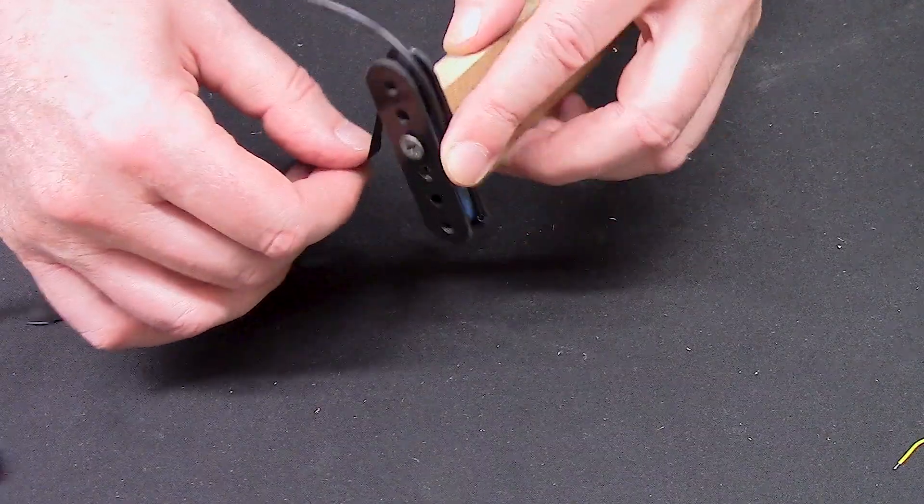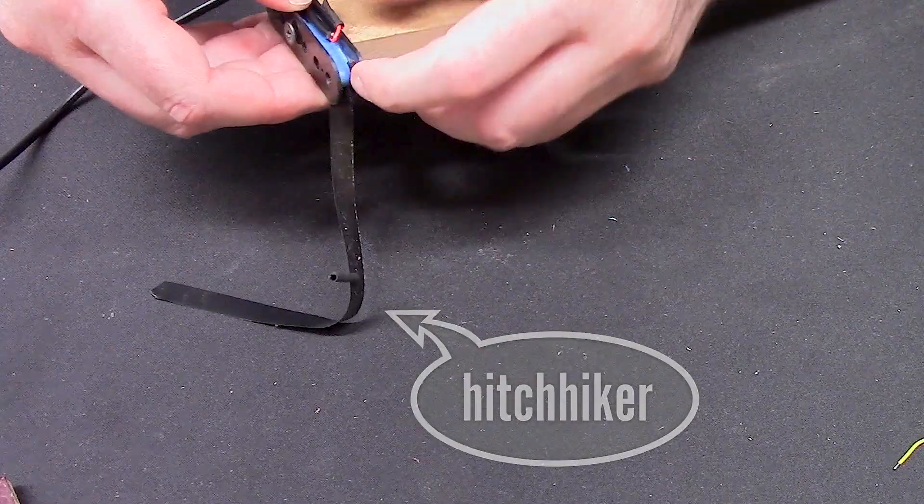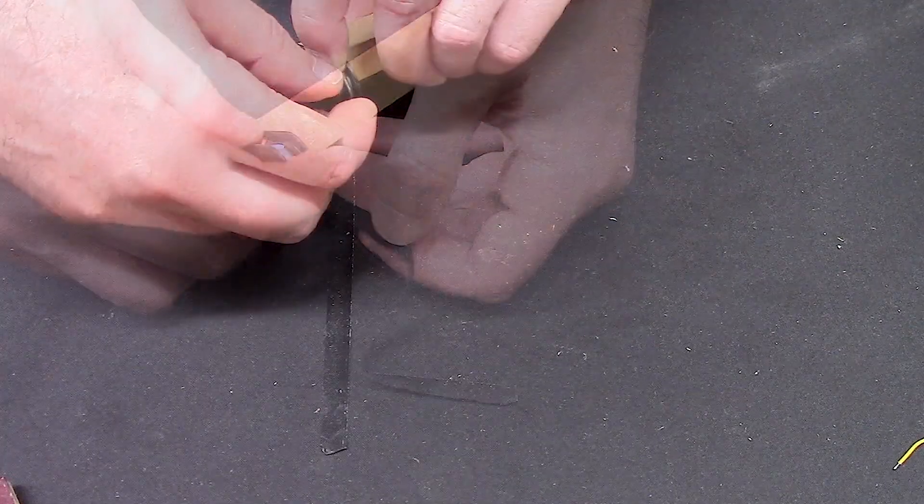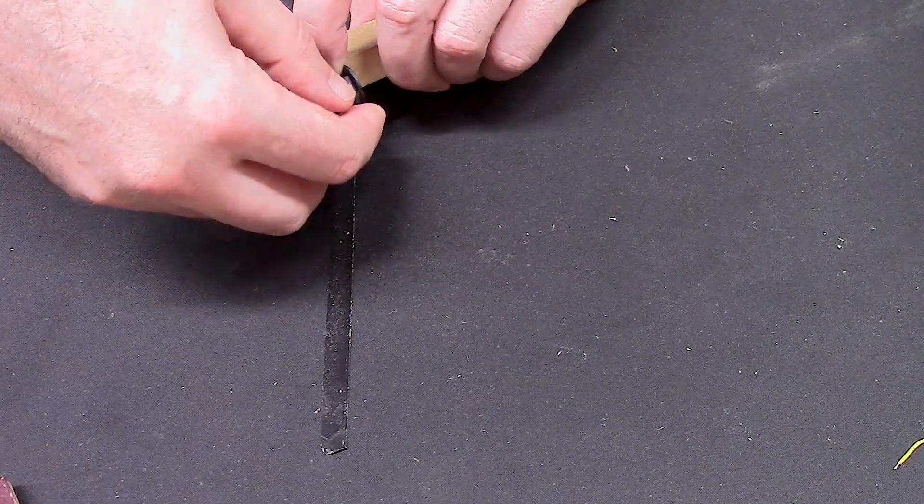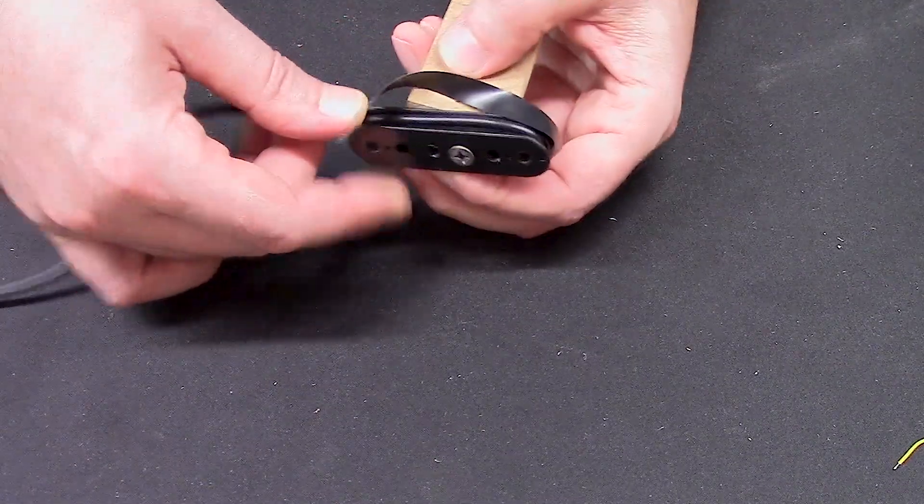Now I've got the TRS cable soldered to the pickup winding wire. And now I've cut a little piece of electrical tape and I'm putting that on to help hold everything down into place. Again, fumbling around a little bit.